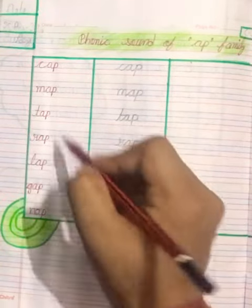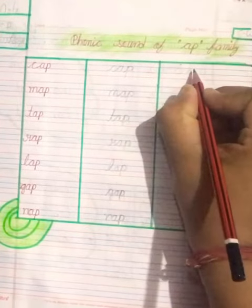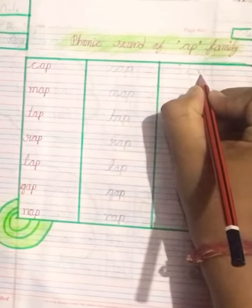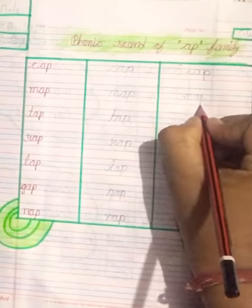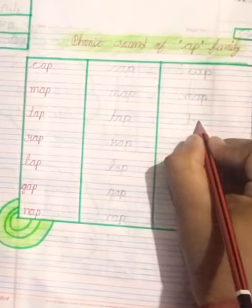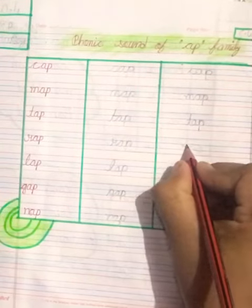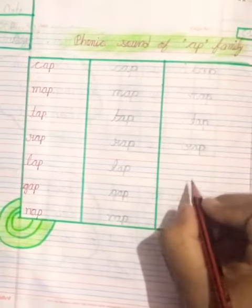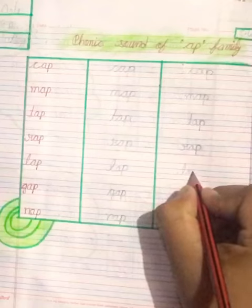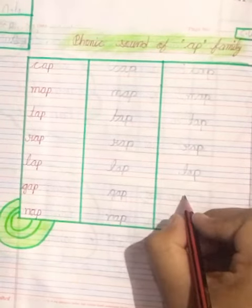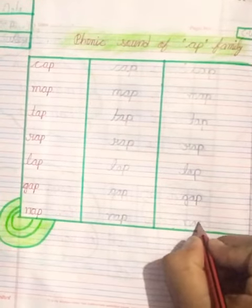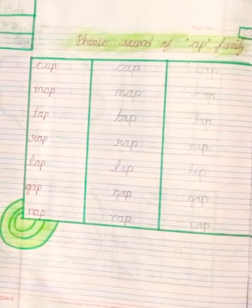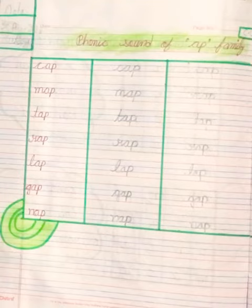Look at these words and also write: cap, cap, map, map, tap, tap, rap, rap, lap, lap, gap, gap, nap, nap. Do as it is same in your English notebook and also students learn it, okay?